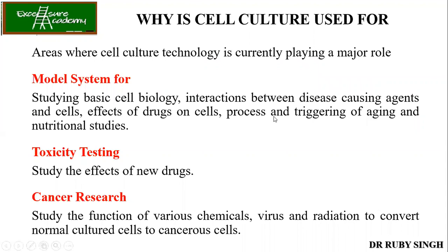Cell culture is used for many reasons. First, it is used as a model system to study — for example, studying the effects of coronavirus on cell tissues, effects of drugs on cells, the process of aging, and nutritional studies. For anti-cancer drug discovery, you can add candidate drugs to animal tissue cultures and see whether they kill cancer cells. You need both a control cell and a cancer cell. The drug should kill only cancer cells and not the normal control cells.